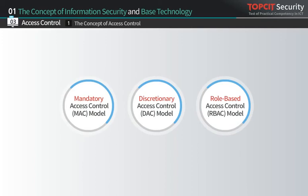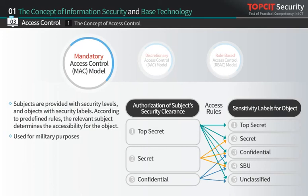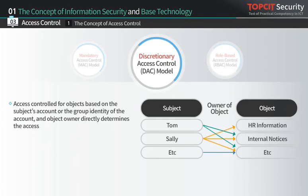The following are three major models for implementing access control systems to ensure only authorized users can access information assets. The mandatory access control model assigns security levels to subjects and security labels to objects, enabling the system to determine access according to predefined rules. Mostly used for military purposes, it maintains strong security but lower management efficiency. In the discretionary access control model, access is based on the subject's account or group identity, and the object's owner determines access rights. This model is mainly used for UNIX and Linux systems.